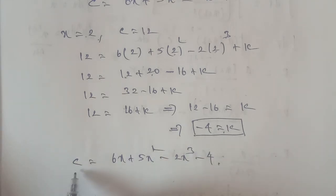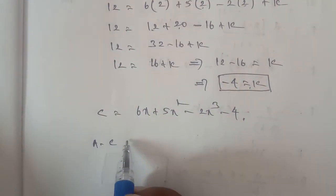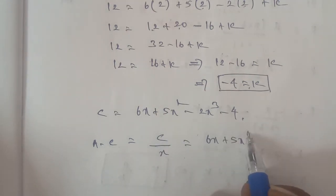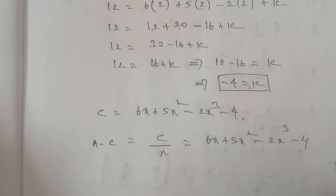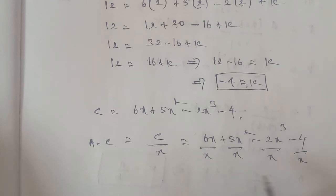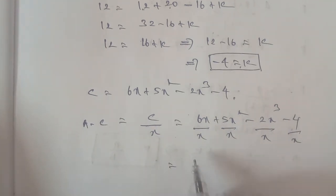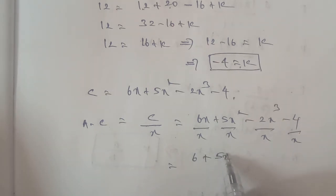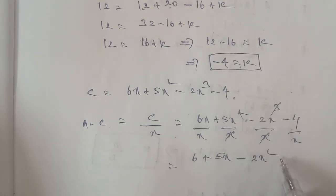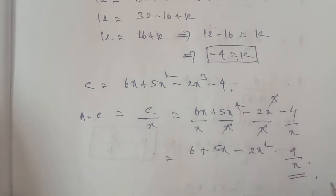This is the total cost function. Now the average cost formula is AC equal to C by X. So AC equals 6X plus 5X square minus 2X cube minus 4, divided by X. Dividing each term by X: the X terms cancel, giving AC equal to 6 plus 5X minus 2X square minus 4 by X. Some more answer, thank you.